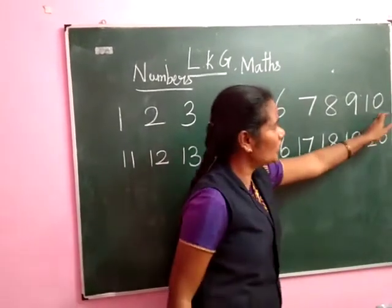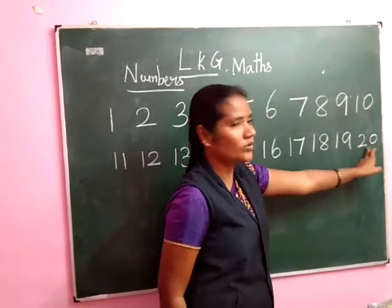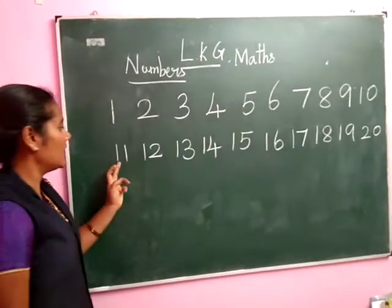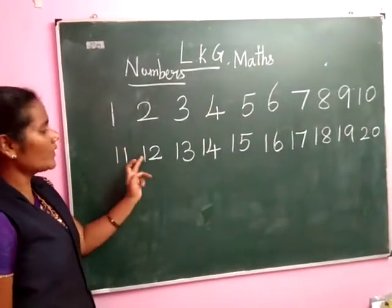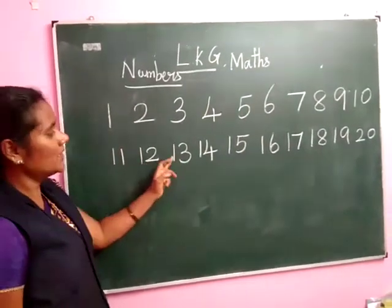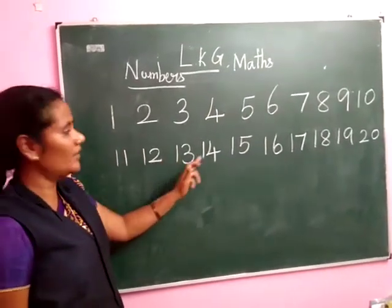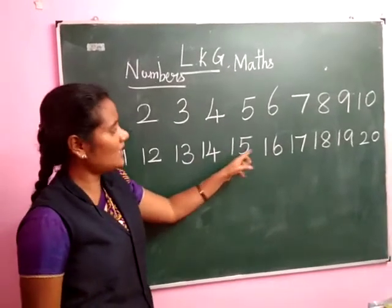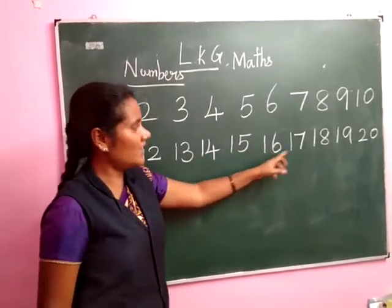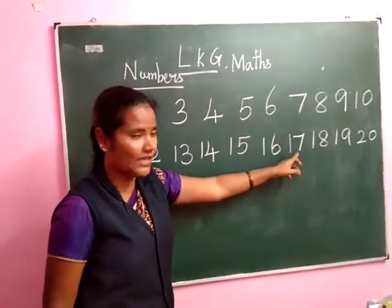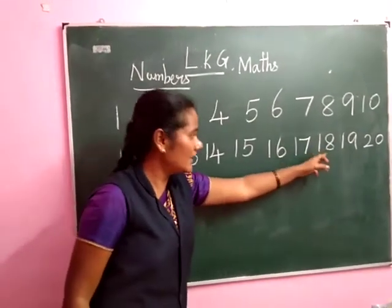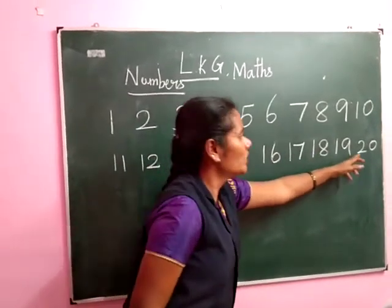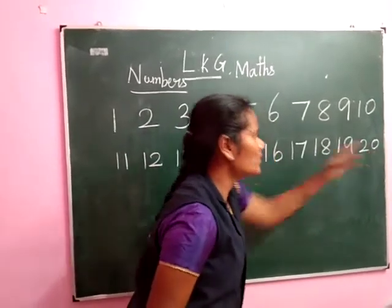Here: 1, 0 — 10. 2, 0 — 20. Listen: 11, 12, 13, 14, 15, 16, 17, 18, 19, 2, 0 — 20.